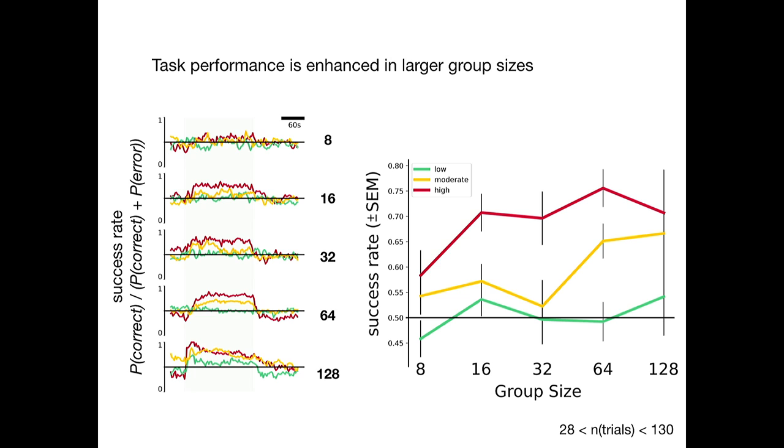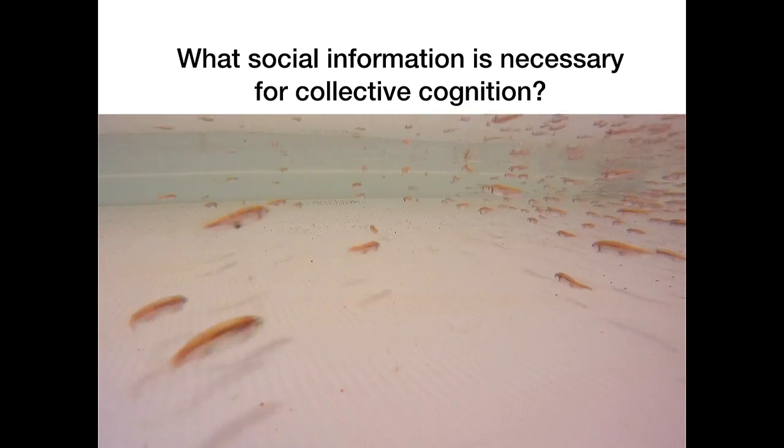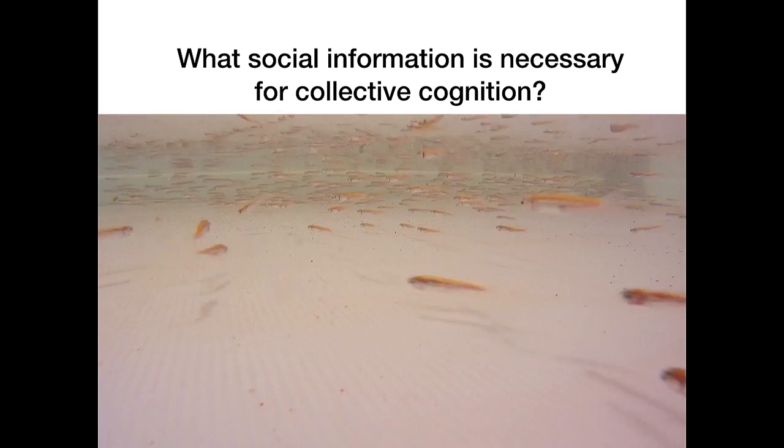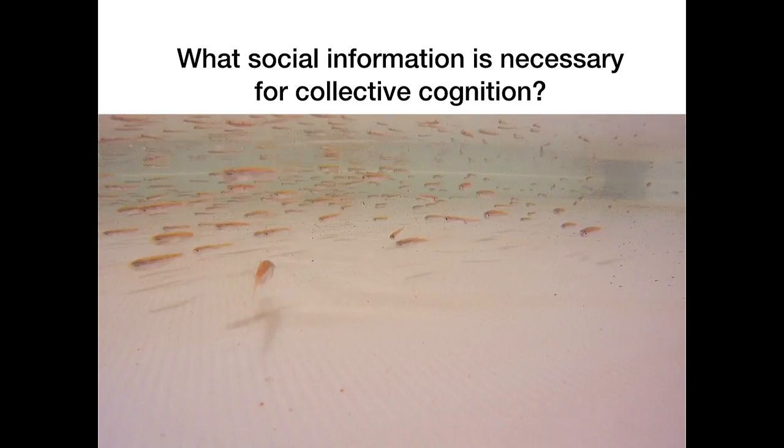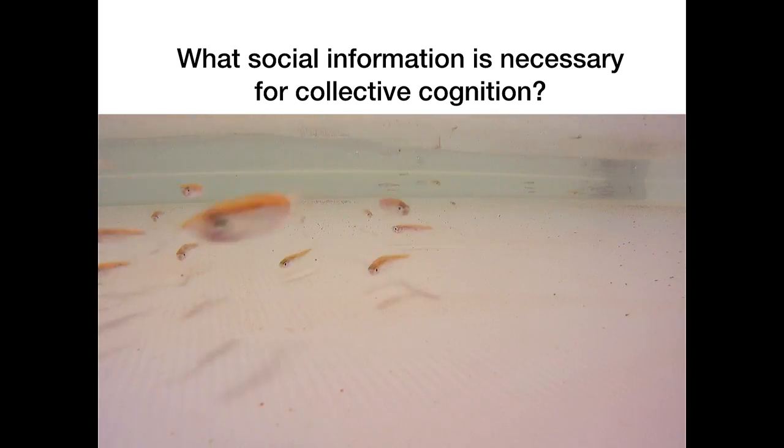So for the last part of my talk, I want to introduce something that I haven't started yet. It's a collaboration that I'm excited about. And that is getting at the question of what social information is necessary for collective cognition. So in the experiments I've shown you so far, it's very difficult to tease apart what information is social and what is asocial in the collective response to the moving dots paradigm. But if we move to a non-living system or a completely asocial system, we can start to tease these things apart.